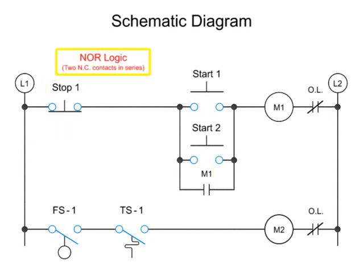NOR logic, an extension of NOT logic, operates by the inclusion of a second normally closed push button in series. In this arrangement, pushing stop button 1 or stop button 2, the M1 coil is shut off and the M1 holding contact is deactivated.